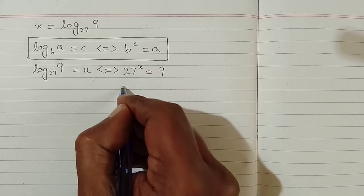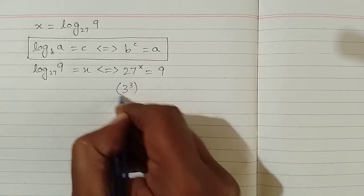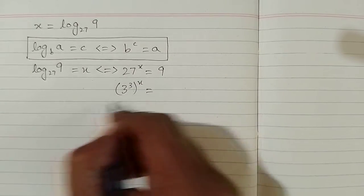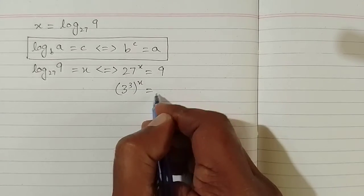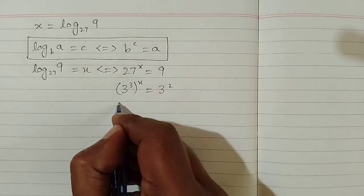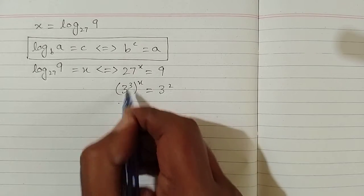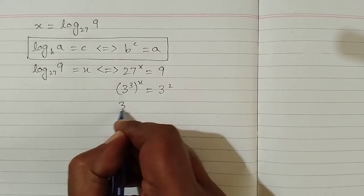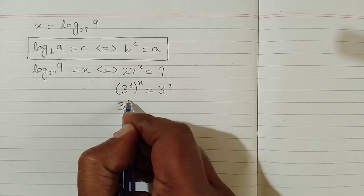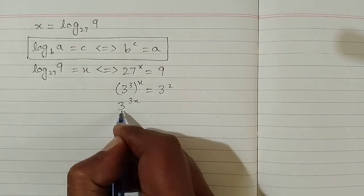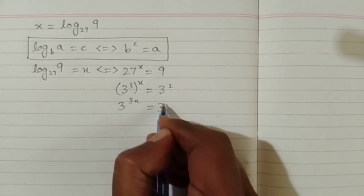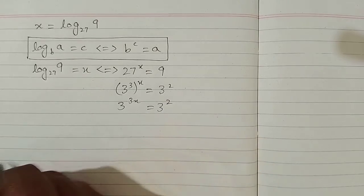Now 27 is 3 cubed, raised to the power x, and 9 can be written as 3 squared. We have a power on a power, so we multiply these powers: 3 multiplied by x is 3x. So we have 3 raised to the power 3x is equal to 3 raised to the power 2.